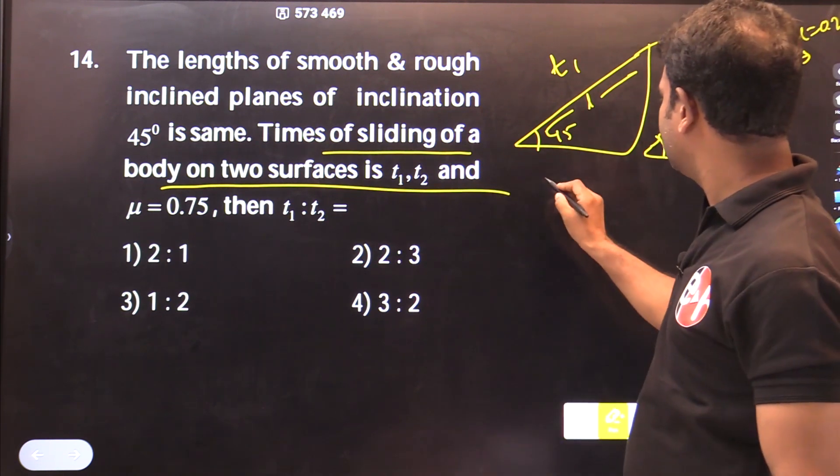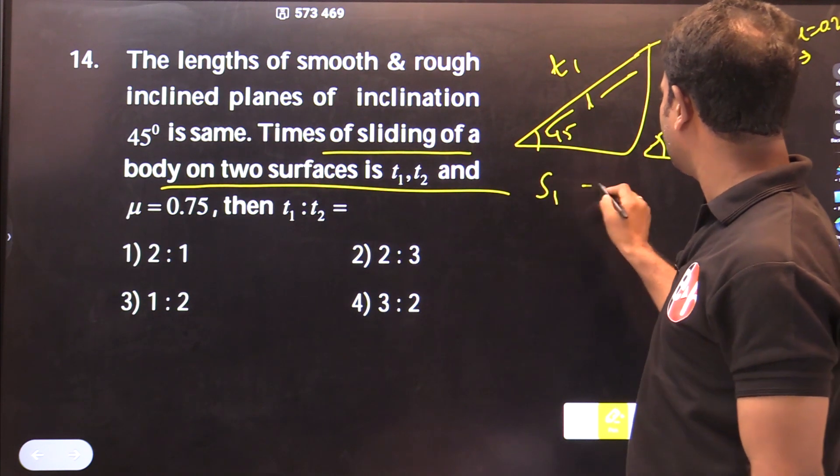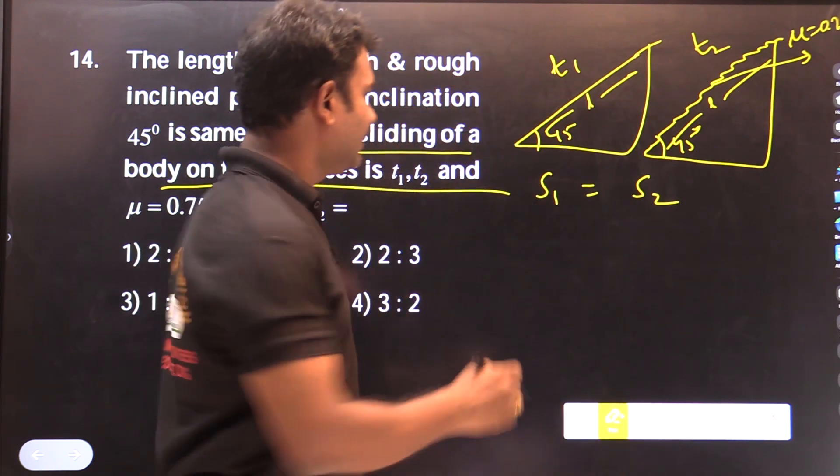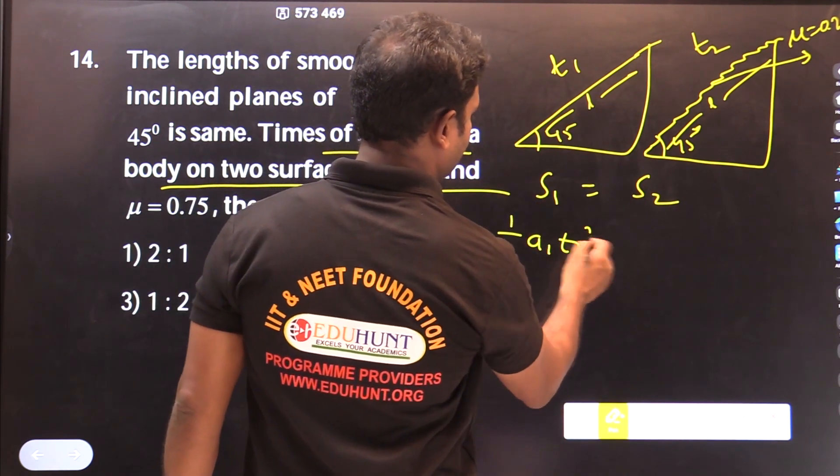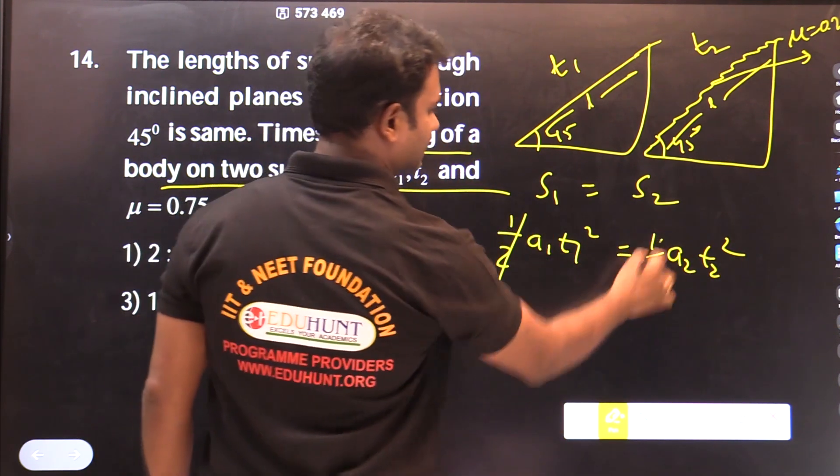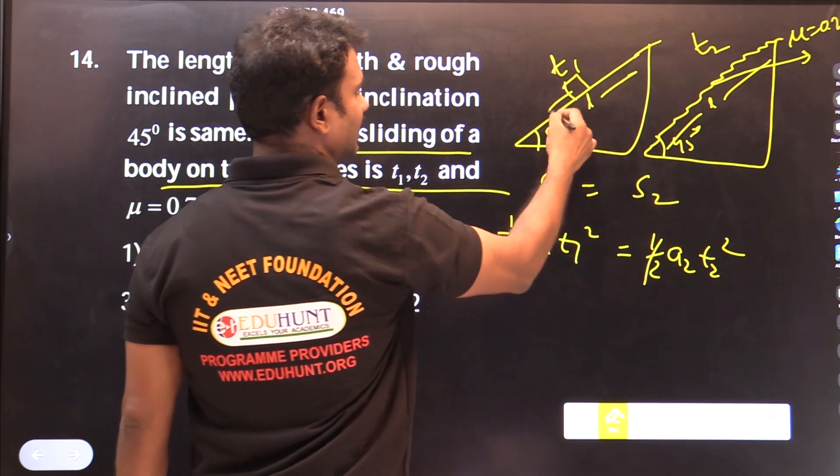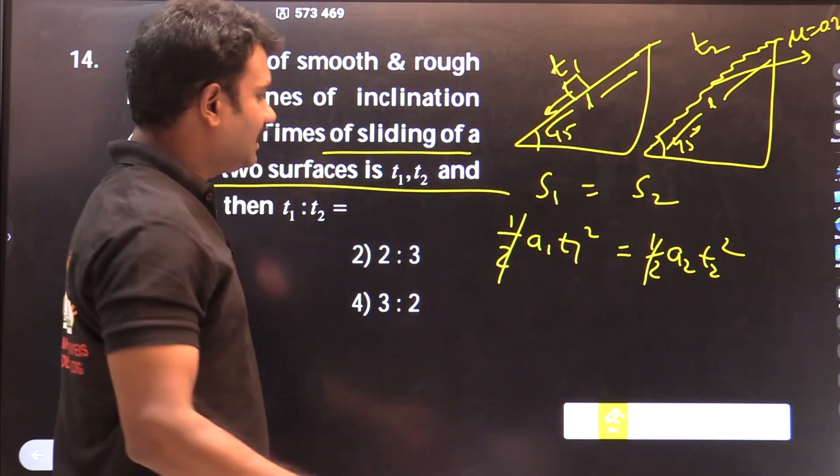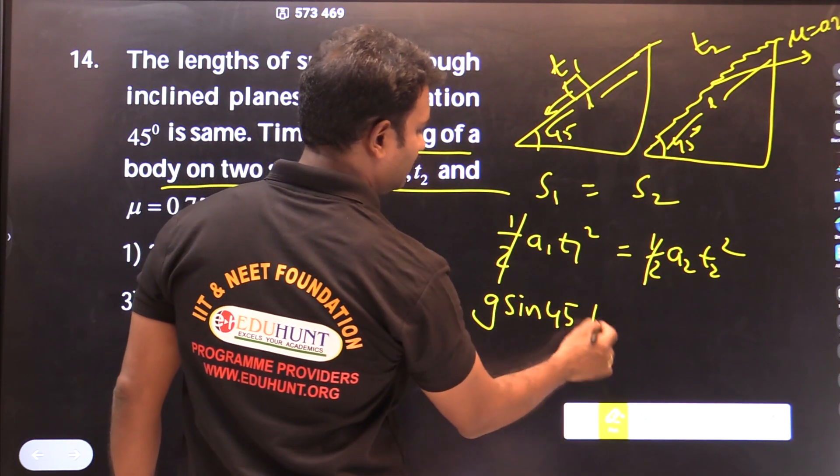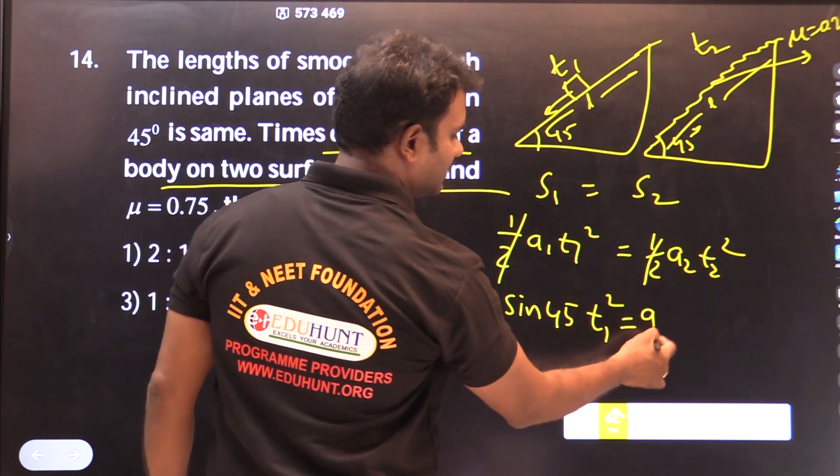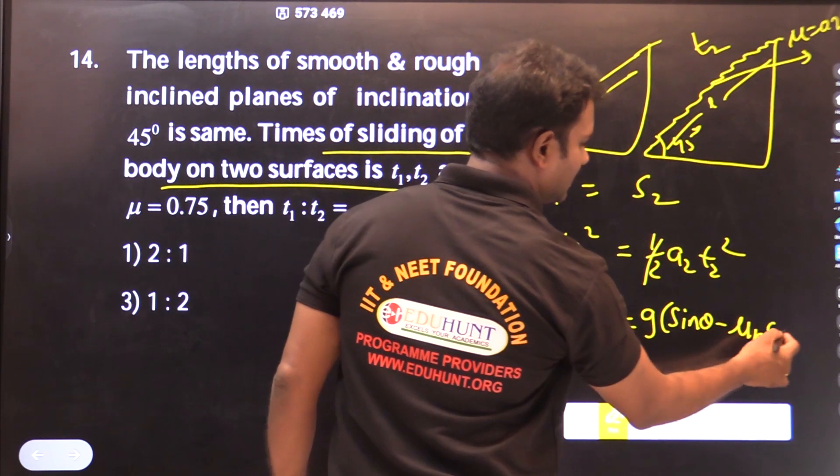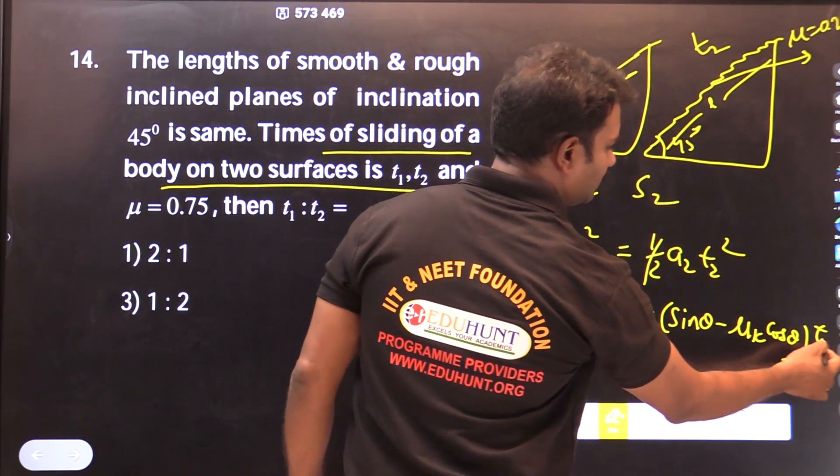In both cases, distance is same, S1 equals S2. S equals u plus half a t squared. Initial velocity 0. So half A1 T1 squared equals half A2 T2 squared. Half cancels. For smooth plane, g sin theta, so g sin 45 times T1 squared equals g sin theta minus mu K cos theta times T2 squared.